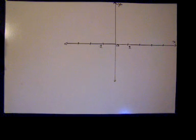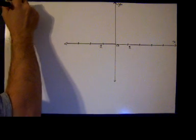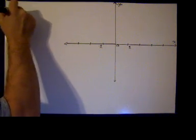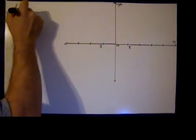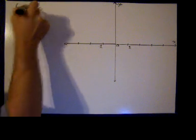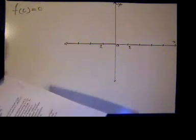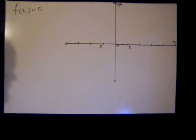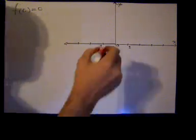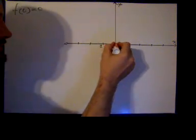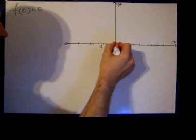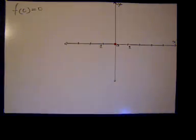Here we're just given certain details. And the first detail is that f(0) equals 0. That implies that the point (0, 0) is on the graph. So I'm going to mark that right there in red. So we have (0, 0) on the graph.